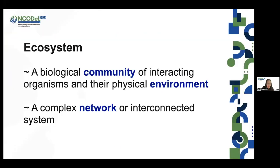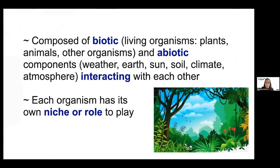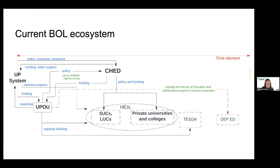What is an ecosystem? The dictionary defines it as a biological community of interacting organisms and their physical environment — also described as a complex network or interconnected system. A biological ecosystem has biotic components, meaning living organisms, and abiotic components — non-living elements such as weather, climate, earth, sun, and soil. These biotic and abiotic components interact with each other within the ecosystem, and each organism has its own niche or role to play.